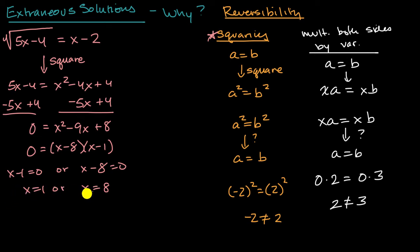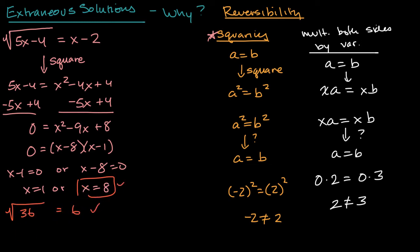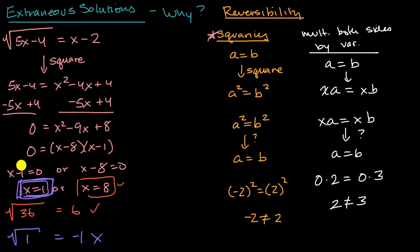Let's test these solutions. For x equals eight, if we test it in the original equation, we get the square root of 36 is equal to six, which is absolutely true. But for x equals one, we get the square root of five times one minus four equals one minus two, which equals negative one. That did not work. This is an extraneous solution — you would not say x equals one satisfies this equation, even though you got there with legitimate algebraic steps.